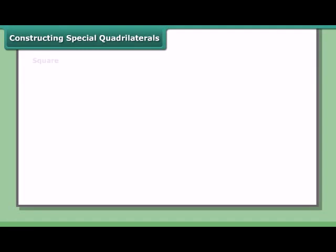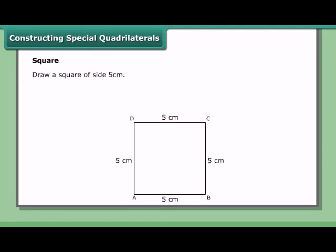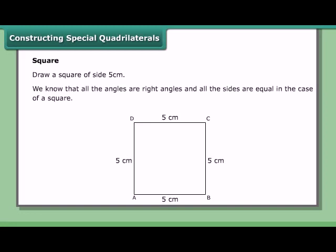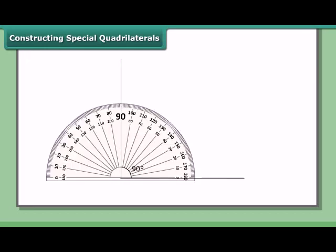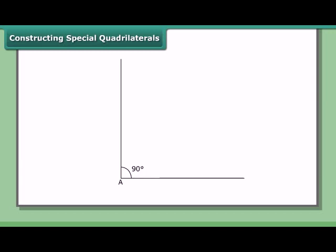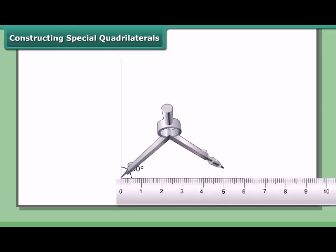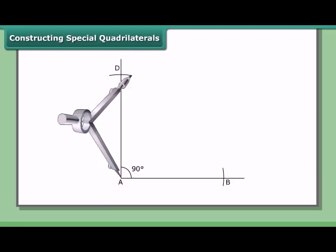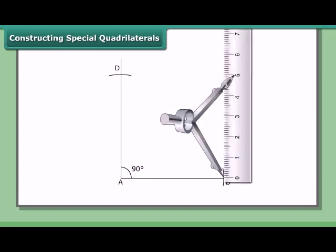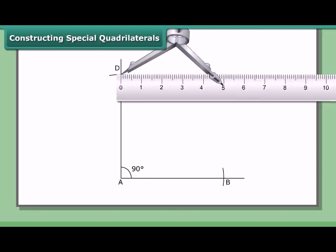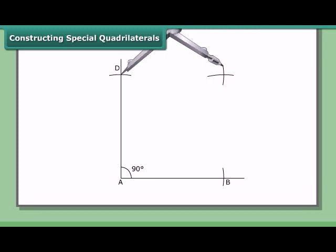Constructing a special quadrilateral — the square. Draw a square of side 5 cm. All angles are right angles and all sides are equal. Steps: Draw a right angle at point A using a protractor or compass and ruler. Set the compass to 5 cm and cut off sides AB and AD along the arms. With B as center and the same radius, draw an arc. With D as center and the same radius, draw an arc to cut the first arc at C. Join C to B and D. ABCD is the required square.